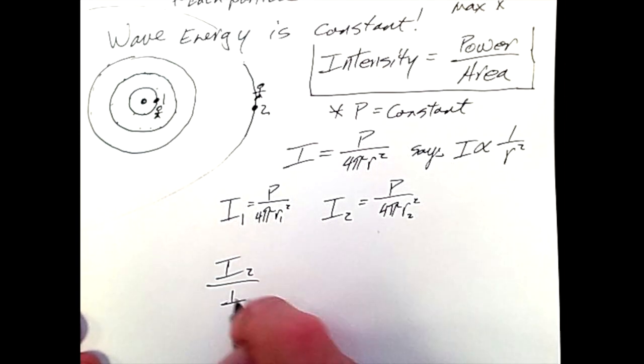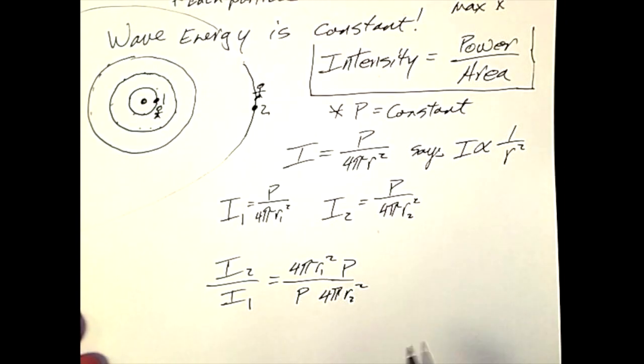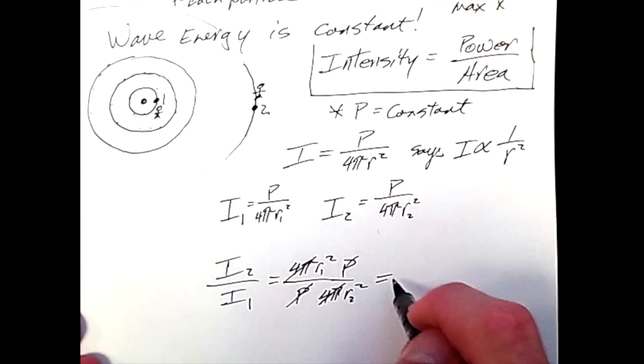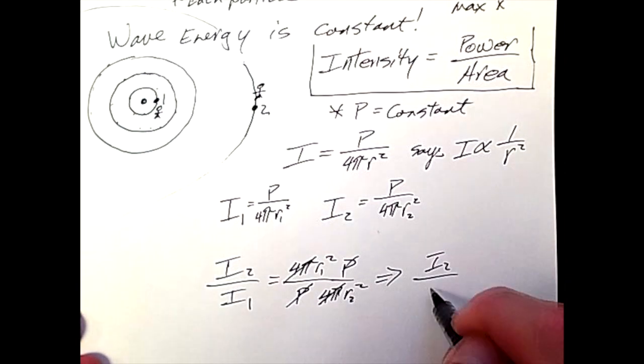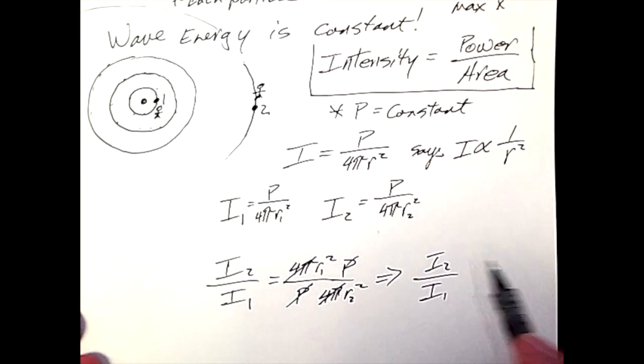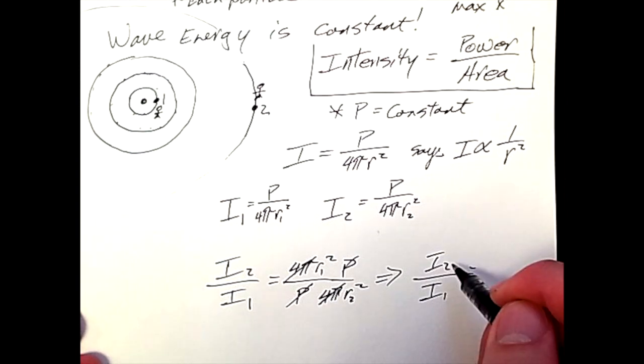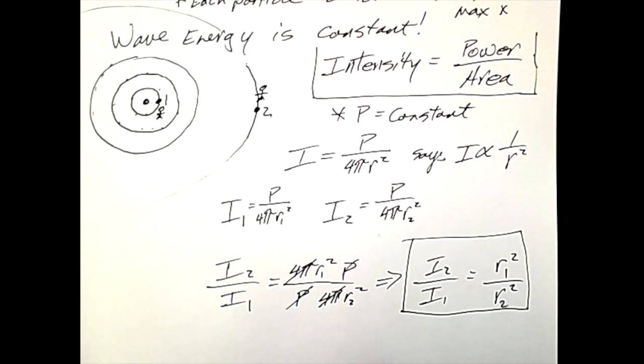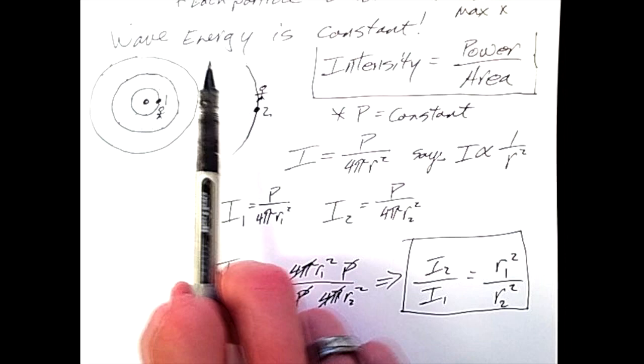So if I say that I2 is proportional to I1, putting these two together, we see that the P cancels, the 4 pi cancels, and the R's are the only thing that remains. So in terms of proportionality, this transforms to be a ratio. The intensities, being inversely proportional to the radii, would have a formula where we compare from one point to another as I2 over I1 compared to R1 squared over R2 squared. This is how we analyze wave energy intensity, truly, when the energy is constant.